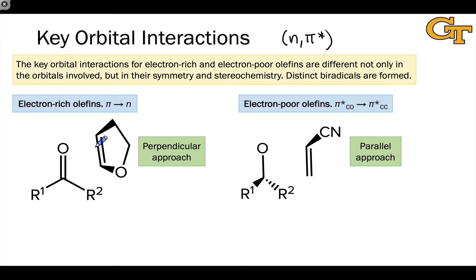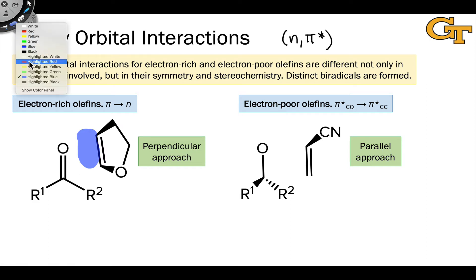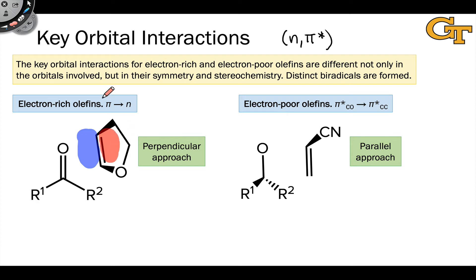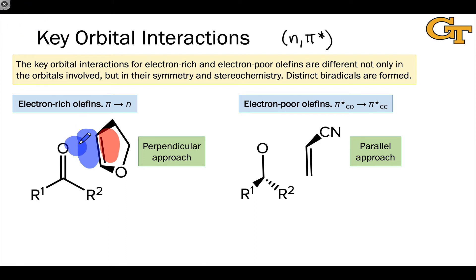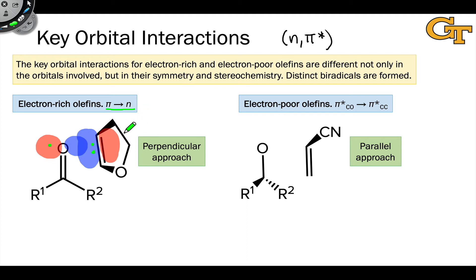For an electron-rich olefin, the key reactivity is nucleophilicity. The pi bond of the electron-rich enol ether is nucleophilic, so it acts as the electron donor in our orbital interaction, and the half-filled n orbital of the photo-excited ketone is the acceptor. The key orbital interaction is therefore between the filled pi orbital of the electron-rich olefin and the half-filled n orbital of the photo-excited ketone. Geometrically, the pi systems are perpendicular to each other to facilitate this overlap — this is why it is referred to as perpendicular approach.